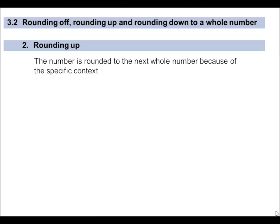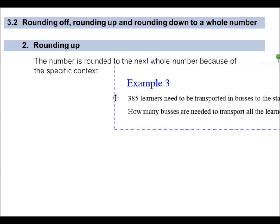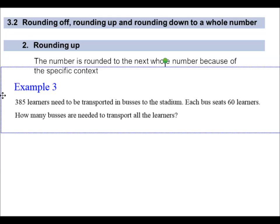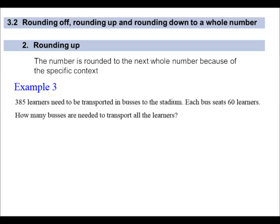Let's look at rounding up—this is context specific. For example, Example 3 in your book: 385 learners need to be transported in buses to the stadium. Each bus seats 60 learners. How many buses are needed to transport all the learners? Well, you take 385 divided by 60 and you will get 6.416. You need more than six buses. Now remember when we were using our rounding rules, we looked at the neighbor and that was less than five, so that would have meant we left it at six. But you would have too many learners to fit into six buses, so the school would have to order seven buses in this case. You cannot overload the bus.